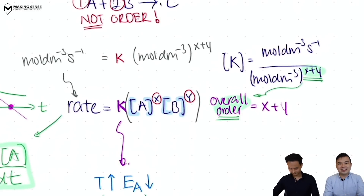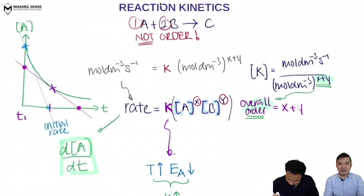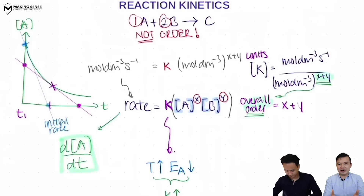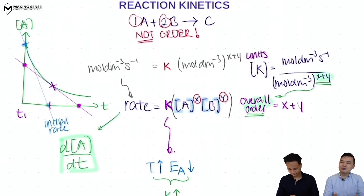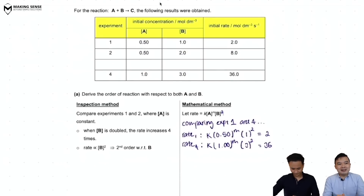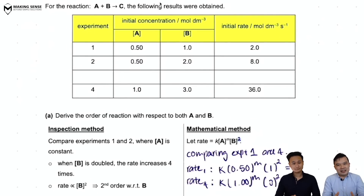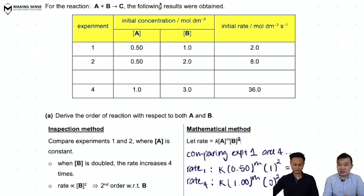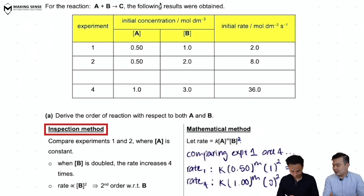Now the next important skill is finding the orders of a reaction. Exam questions love to give you a table of information. We're going to work through an example that gives initial concentrations of A and B along with the initial rate — this information is sufficient to deduce the rate equation. The first method we'll use is the inspection method.